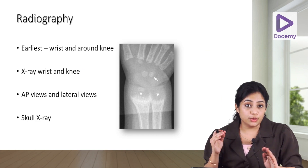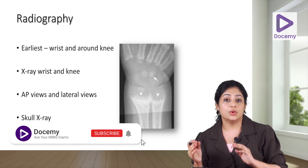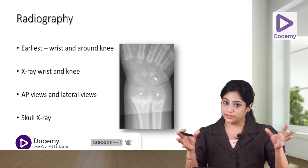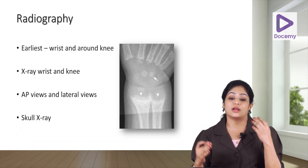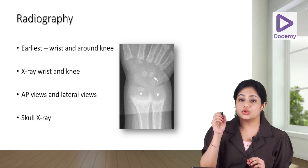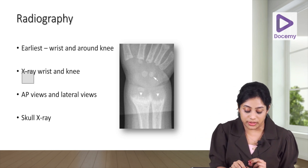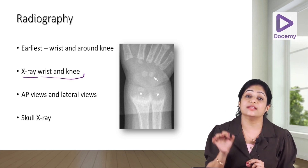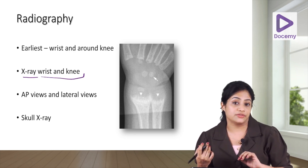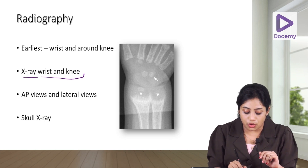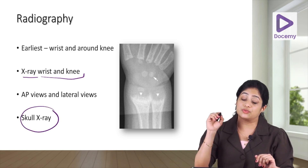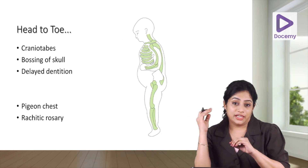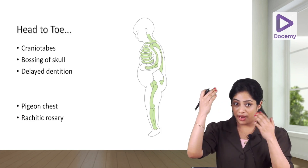Coming to the radiographic findings: the earliest manifestations appear in areas of maximum growth. Around the wrist and knee joint in children — so to screen a patient for rickets, we take X-rays of the wrist and the knee, both AP and lateral views. The skull X-ray is also useful and will show early findings especially in an infant. We will learn the features of rickets from head to toe.